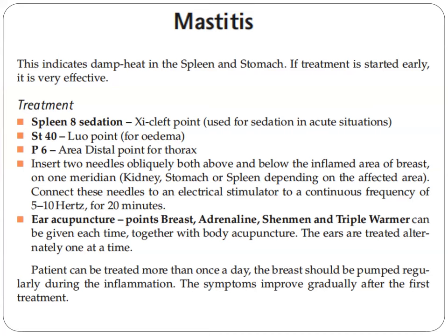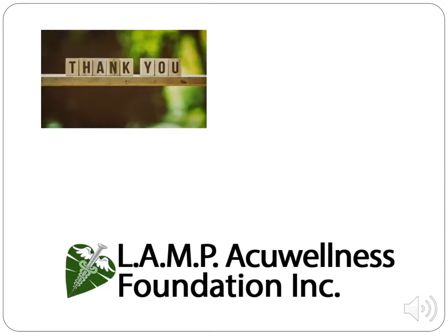Pericardium-6, which is the area distal point for the thorax. Procedure: insert two needles obliquely, both above and below the inflamed area of the breast, on one meridian — kidney, stomach, or spleen — depending on the affected area. Connect these needles to an electrical stimulator at a continuous frequency of 5 to 10 hertz for 20 minutes. We can also do ear acupuncture using the points breast, adrenals, shenmen, and triple warmer. The ears are treated alternately, one at a time — not simultaneously. The patient can be treated more than once a day. The breast should be pumped regularly during the inflammation. Symptoms improve gradually after the first treatment.